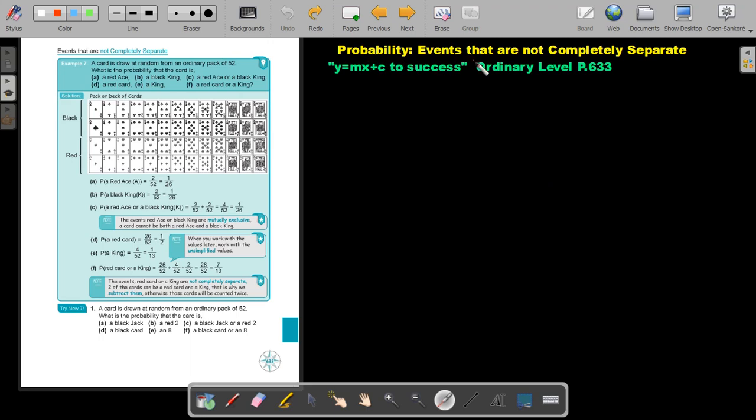Probability, events that are not completely separated. You will find this on page 633 in the Namibia Ordinary Level Mathematics textbook, y equals mx plus c to success. In the previous one, we looked at events that are completely separated. Now, the events are not completely separated. Let's look at an example.